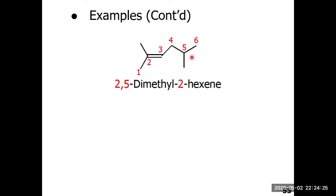In another example, the first thing we do is find the parent chain. The parent chain should be the longest continuous carbon chain containing the most number of carbons, and the double bond should be in the parent chain. Obviously this is our parent chain, which has six carbon atoms — hence hexene. We number this alkyl chain so that the carbon-carbon double bond receives the lowest possible set of locants, numbering from the end nearest the double bond: one, two, three, four, five, and six. At carbons two and five we have branch points — methyl substituents.